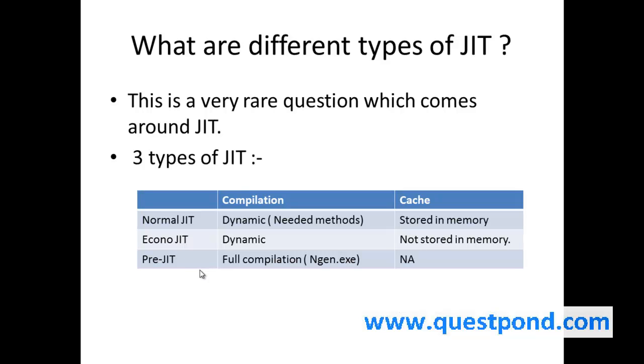Finally, there is something called PreJIT. In PreJIT, there is no dynamic compilation, there is full compilation. This full compilation is done by ngen.exe. We run ngen.exe and it will compile your complete .NET code into full machine language at that moment itself. This is like a full compilation rather than half compilation.